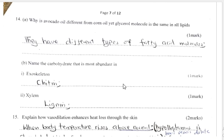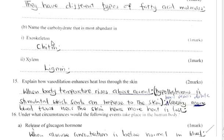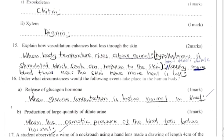Question 14 Part A: Why is avocado oil different from corn oil, yet the glycerol molecule is the same in all lipids? This is because they have different types of fatty acid molecules. Part B: Name the carbohydrate most abundant in exoskeleton — that is chitin. In xylem, we have lignin.